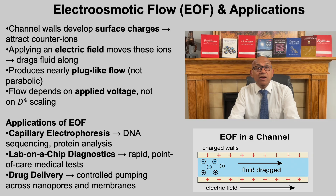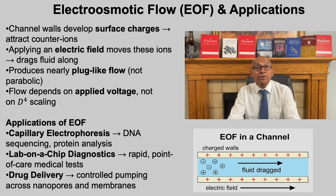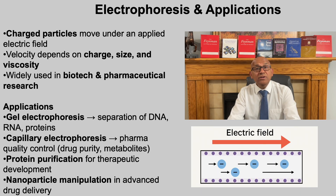Electroosmotic flow occurs when the walls of a channel develop surface charges that attract counter-ions from the fluid. When an electric field is applied, these ions move and drag the fluid with them. Unlike pressure-driven flow, this creates a nearly plug-like velocity profile, and the flow rate depends on the applied voltage rather than the fourth power of the channel diameter. Electroosmotic flow is widely used in biotechnology and pharmaceuticals — in capillary electrophoresis to separate and analyze DNA and proteins, in lab-on-a-chip devices to pump small fluid volumes for rapid diagnostic tests, and in drug delivery across nanopores and membranes.